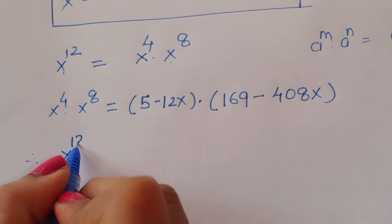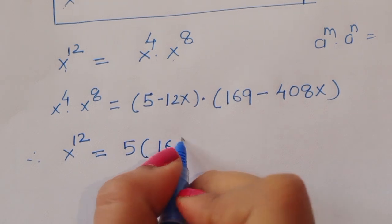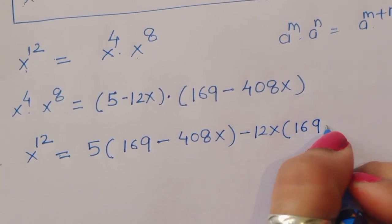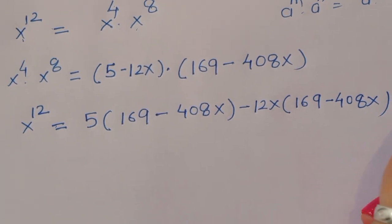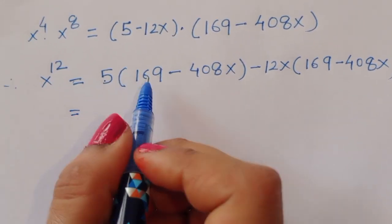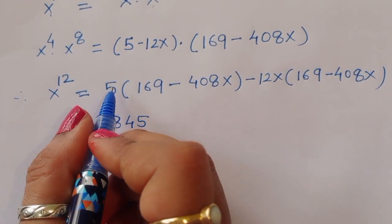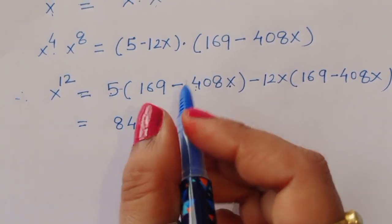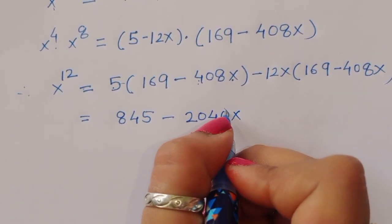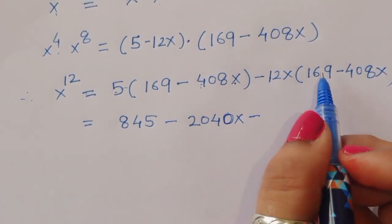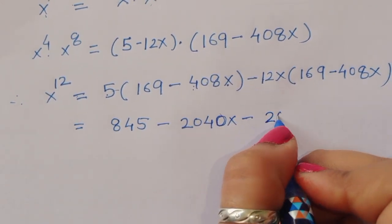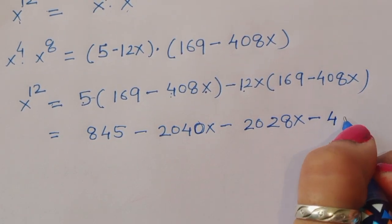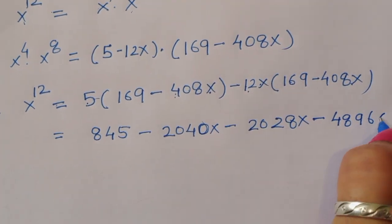So x^12 = (5 - 12x)(169 - 408x). Expanding: 5 × 169 = 845, minus 5 × 408x = 2040x, minus 12x × 169 = 2028x, plus 12x × 408x = 4896x².